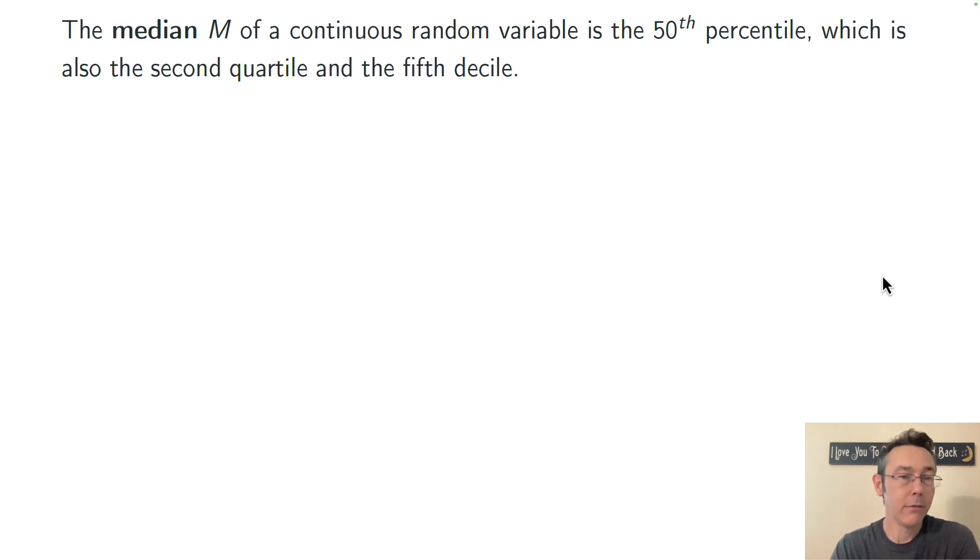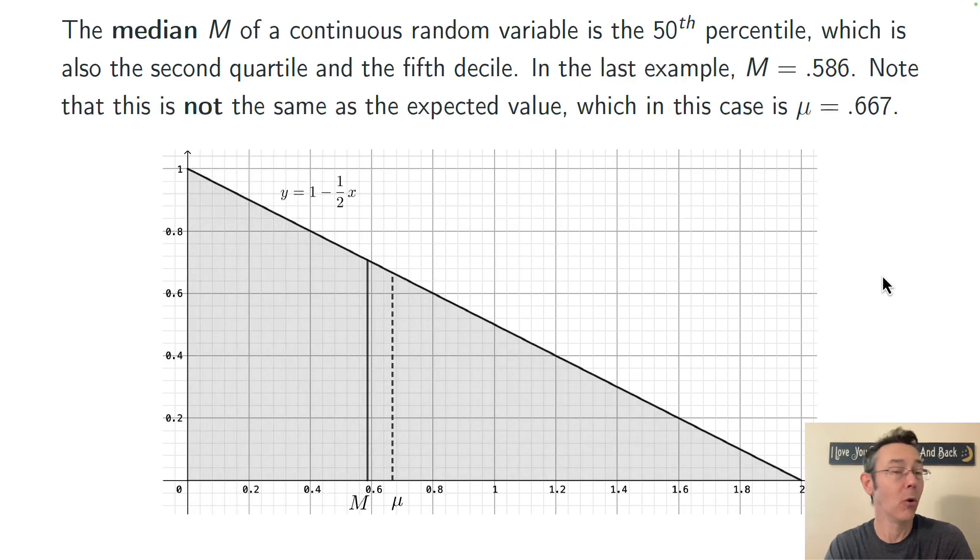Finally, the median M of a continuous random variable is just the 50th percentile of that random variable. That's also the second quartile and the fifth decile. Now, be careful because the median is different than the mean or expected value. And so just to wrap up, here's a picture of that same distribution where I've labeled both the median and the expected value, the mean. And in this case, you can see that the median is slightly less than the expected value. In this example, the median is 0.586 and the mean is 0.667.